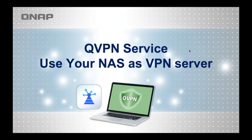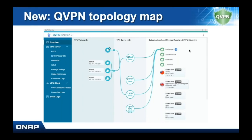Our QVPN app allows you to use your NAS as a VPN server. In the app overview, you can see the different users connected to VPN and the VPN protocols they're using — for example, three users using the QBelt protocol and two users using L2TP. You can see all VPN traffic being funneled through a particular ethernet port. Your NAS can also become a client of a different VPN server, and you can see those connections in the overview. The app now has a clearer topology, and the new QBelt protocol has been added.